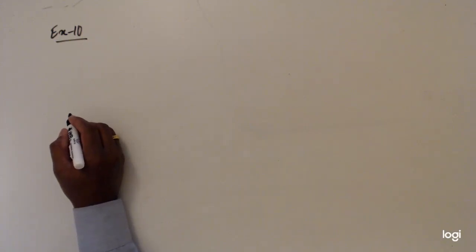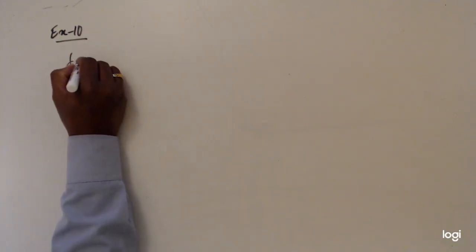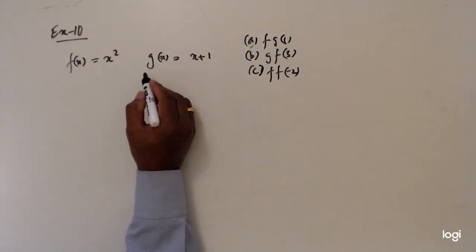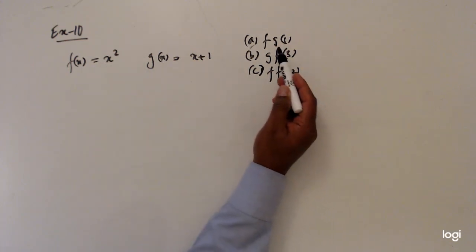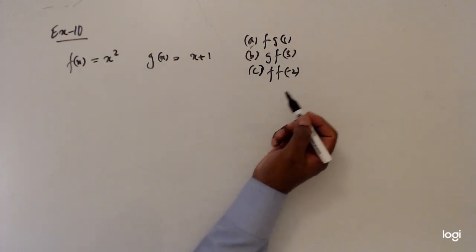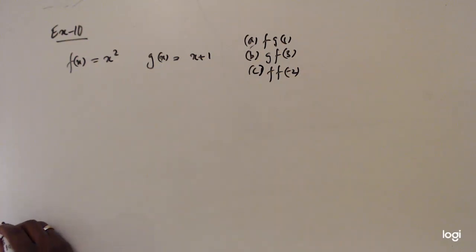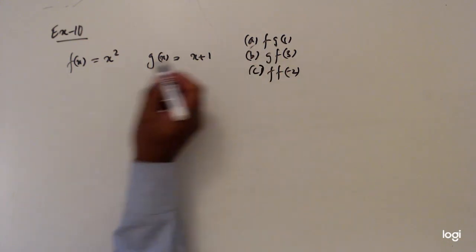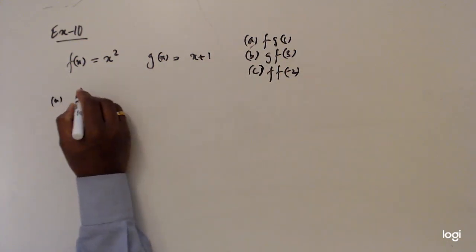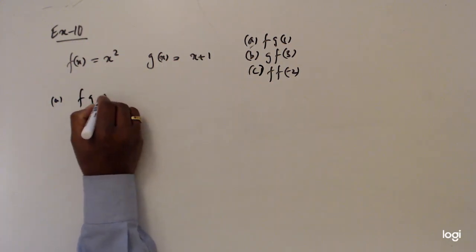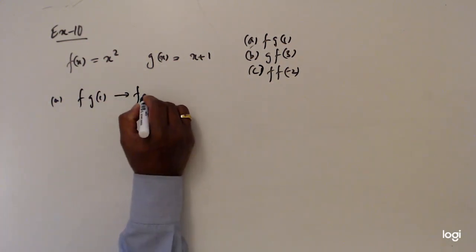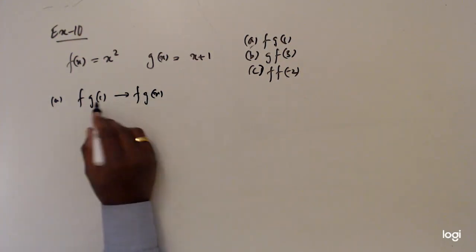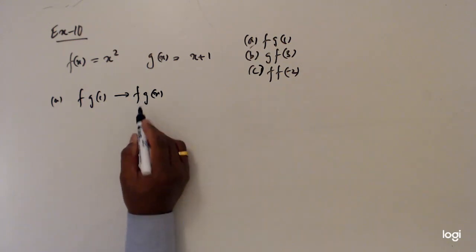We will discuss example 10. g(x) equals x plus 1, and we need to find fg(1), gf(3), and ff(-2). So first we will consider part a. Before we find fg(1), we need to find fg(x) first.